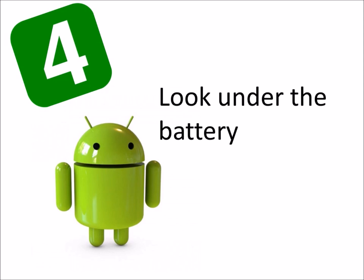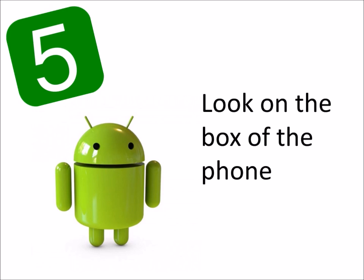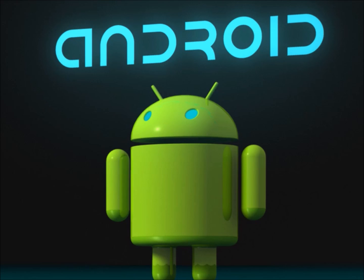Way number four is to look under the battery. Now, depending on if you have a SIM card or no SIM card, you may be in a different spot, but it's definitely there. And last but not least, you can get the box that your phone came in and the IMEI number will be on that box.